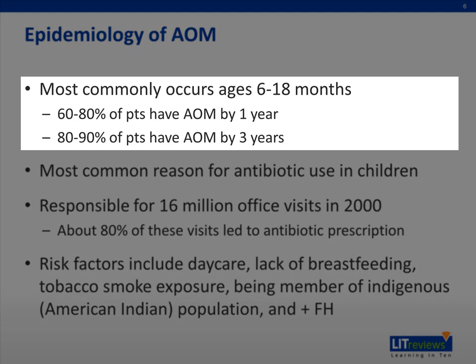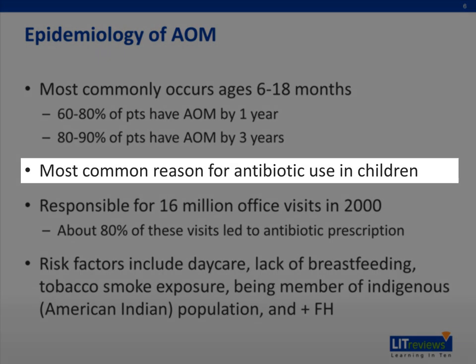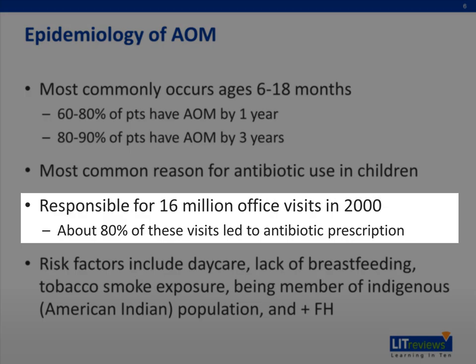Acute otitis media occurs most commonly among children ages 6 to 18 months. Over half of children will be diagnosed with AOM by age 1, and up to 90% will have had at least one episode by age 3. Acute otitis media is the most common reason antibiotics are prescribed to children in the U.S. One study performed in 2000 showed that AOM was responsible for 16 million office visits and almost 13 million antibiotic prescriptions that year.